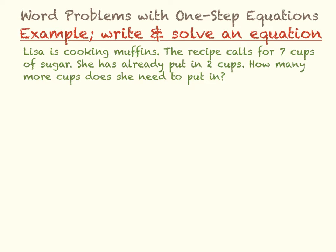So Lisa is cooking muffins. The recipe calls for a total of 7 cups of sugar, and she has already put in 2 cups. So how many more cups is she going to need? We're going to use plus. So the number of cups she needs plus 2 that she's already put in has to equal the total number of cups in the recipe, which is 7.